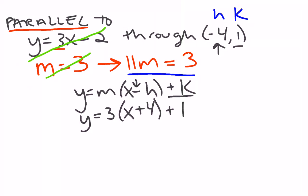And my last two steps are to distribute and combine like terms. Y equals 3x plus 12 plus 1, and I can combine those, and that's my final answer. Y equals 3x plus 13.